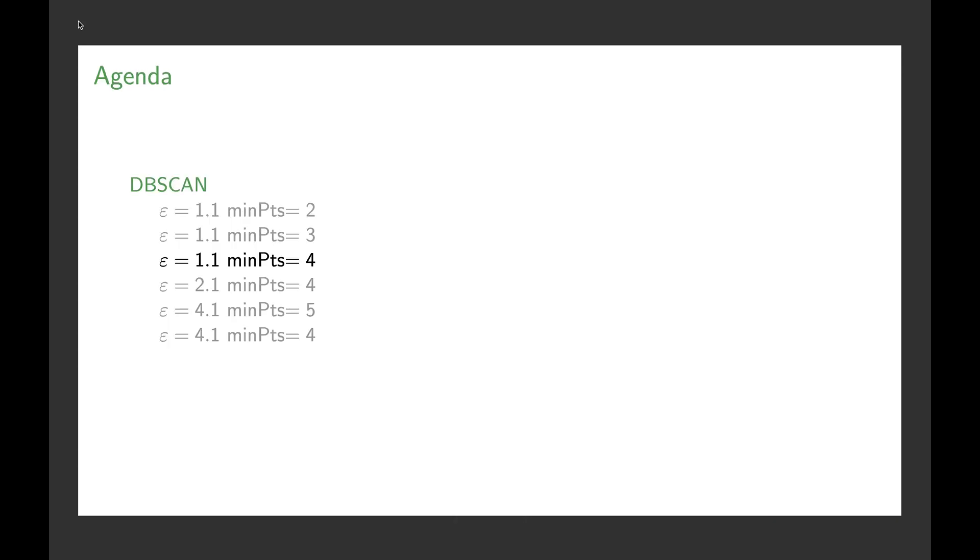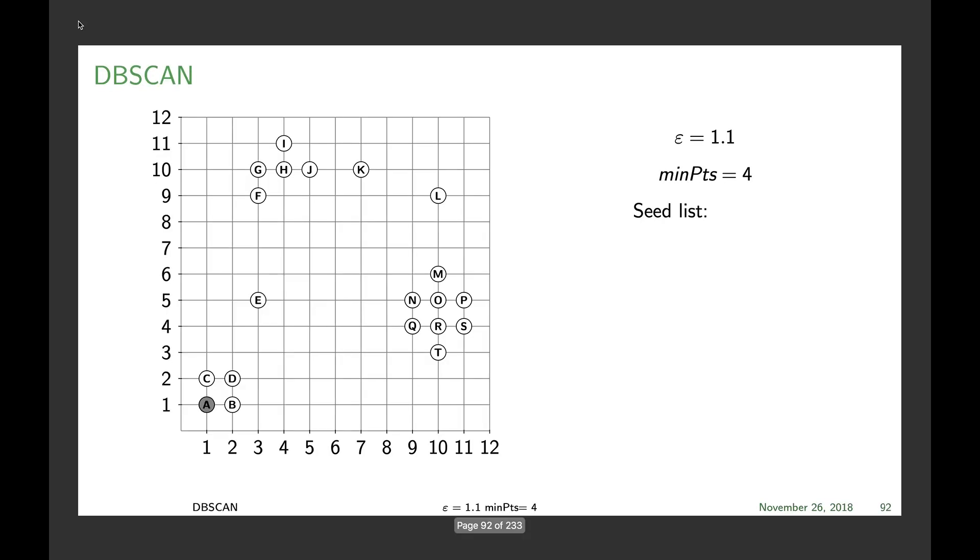Now we have epsilon 1.1 and minPts 4. Only two points fulfill this, so everything else becomes noise up until the point where we reach H. H fulfills this because we have four points in range, making G, I, and J border points.